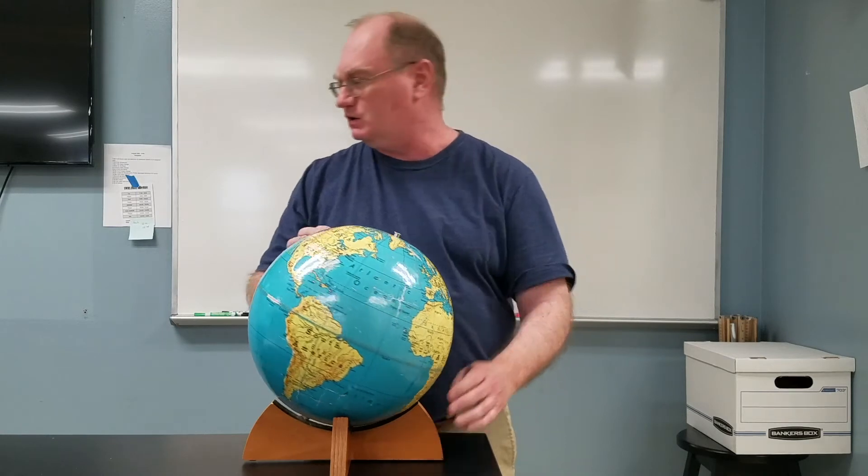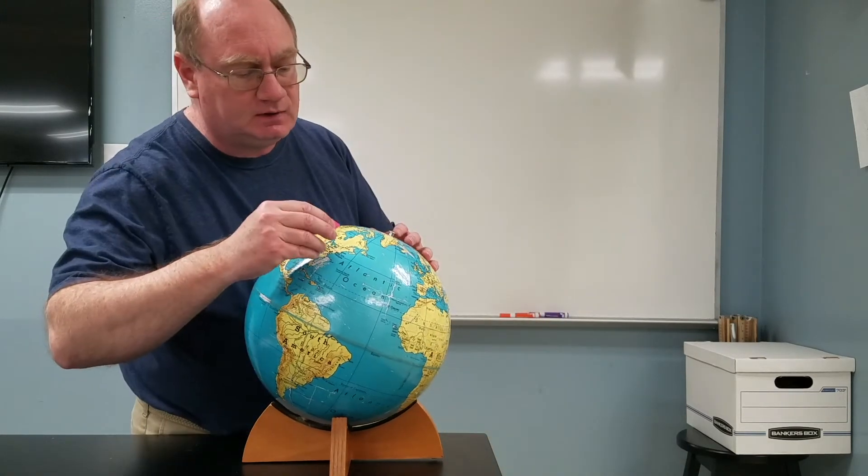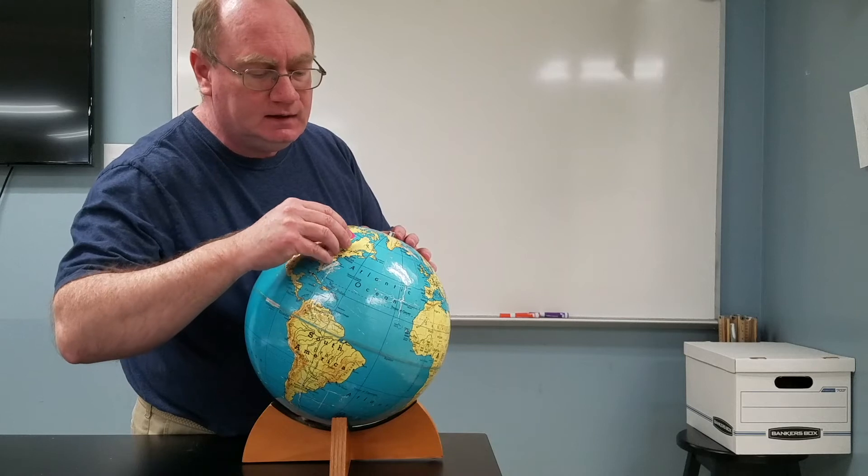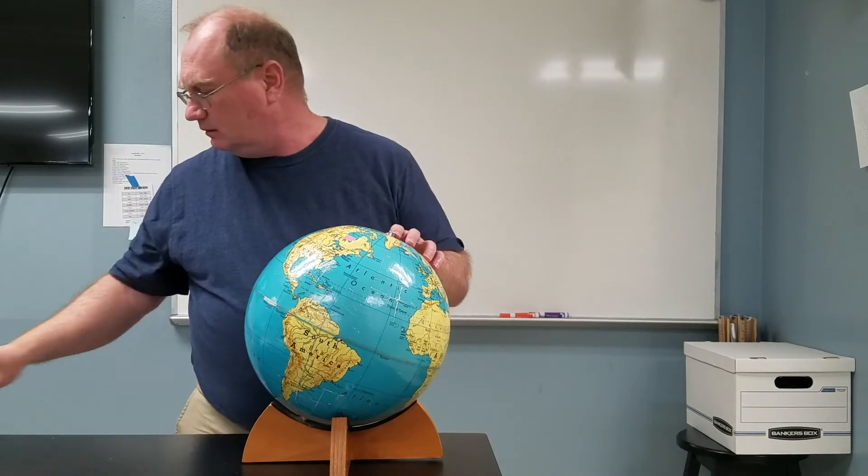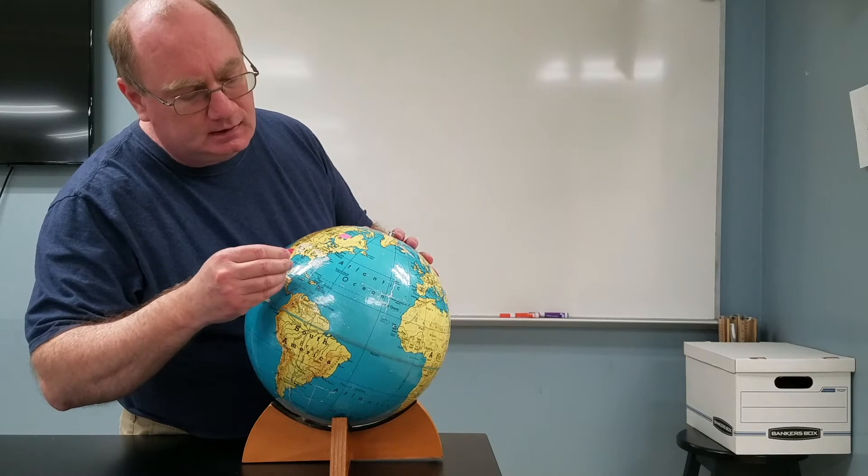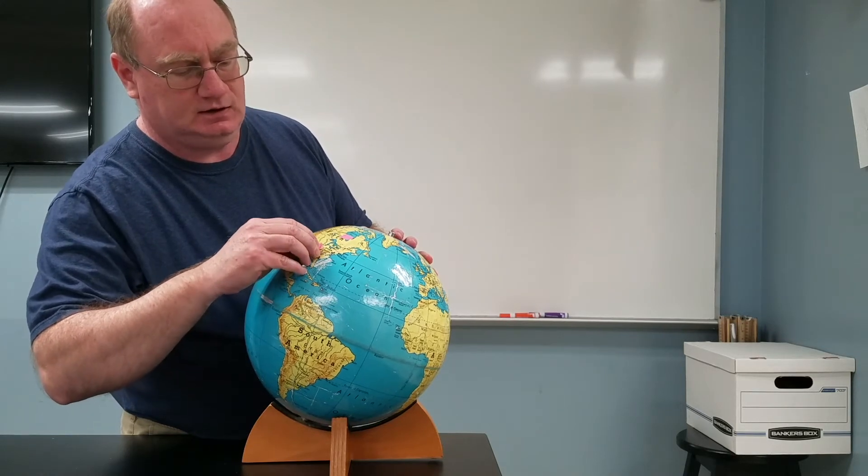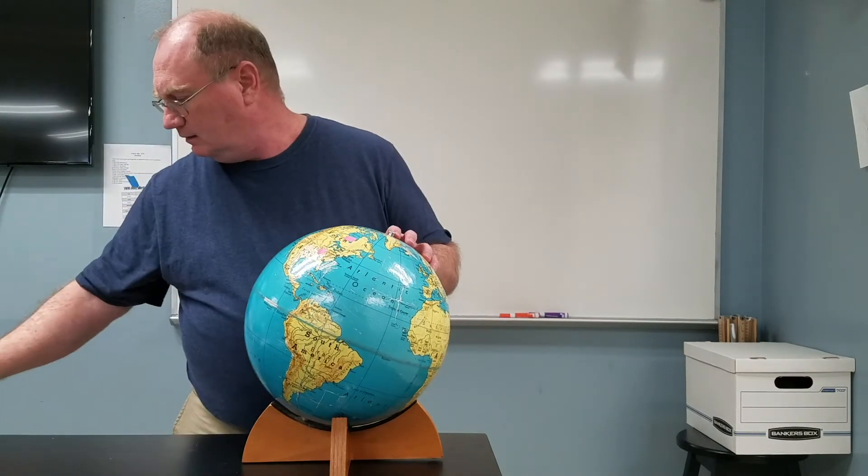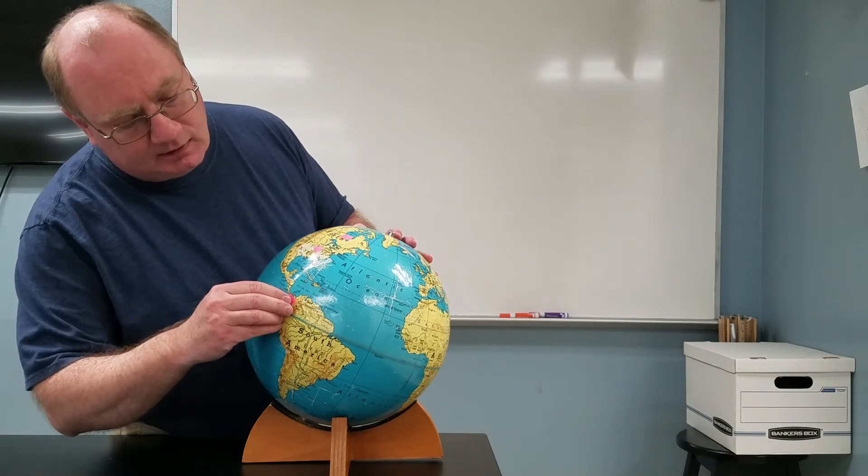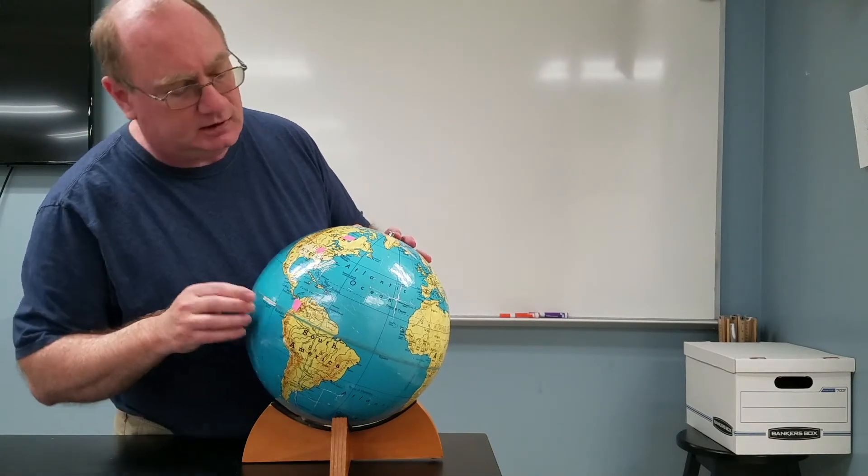But we also talked about two different types of speed - linear speed and angular speed. So I've got a question for you. I'll put these tabs up here. We've got to put one near Hudson Bay, up there, we'll put one down near Kentucky right about there, and we'll put one down here near the equator, near Columbia. The question is, which one of those spots is moving the fastest?